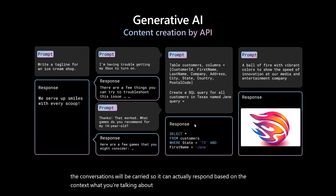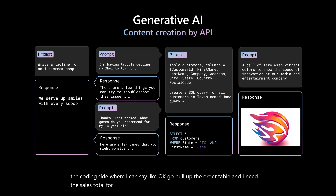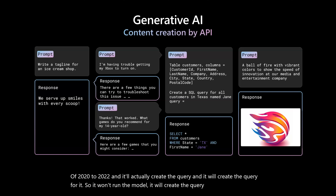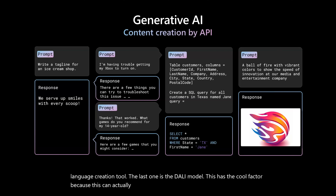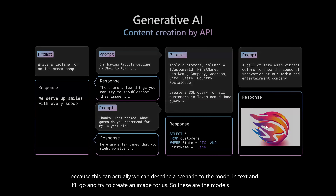Then comes the third pillar, which is coding. I can say, go pull up the order table and I need the sales total for XYZ salesperson for October 2022, and it will actually create the query. It won't run the model — it will create the query because it's a language creation tool. The last one is the DALL-E model, which can take a text description of a scenario and create an image.